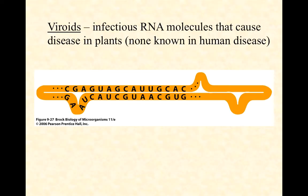Let's talk briefly about two infectious agents that aren't exactly viruses. If we struggle to decide whether viruses are alive or not, we're going to struggle even more with viroids and prions. Viroids are RNA molecules that are infectious, similar to single-stranded RNA viruses, but different from a virus.